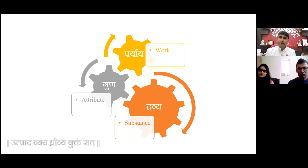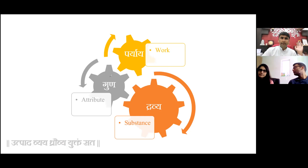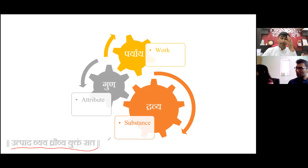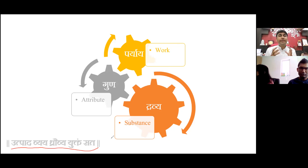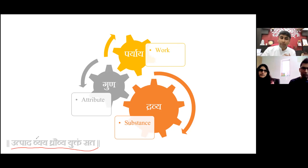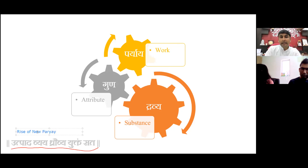How can we see this whole process? We can see it through this sutra: 'Utpadh Vyaya Dhrauvya Yuktam Sat.' Sat means existence or Dravya. How do I define Dravya? Dravya is something which remains always, which always exists. And at the same time, it keeps on changing. So it has Utpadh — rise — every moment a new Pariyaya is taking birth. And at the same time, the old Pariyaya passes away.